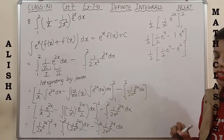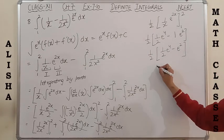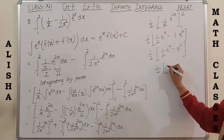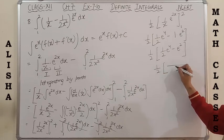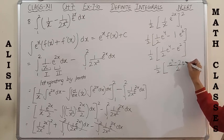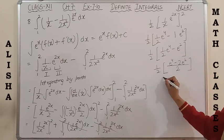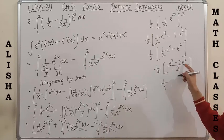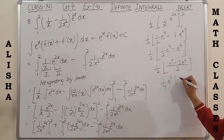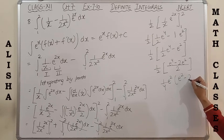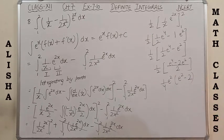Taking LCM: it can be written as (e^4 - 2e²)/4. Taking e² as common factor: the answer is (1/4) × e²(e² - 2).